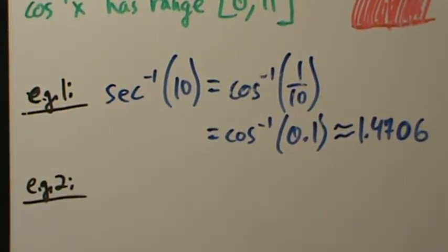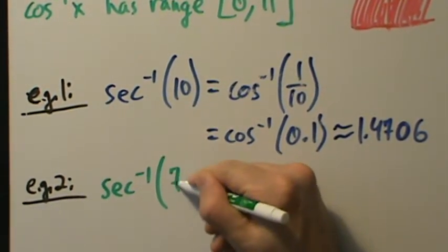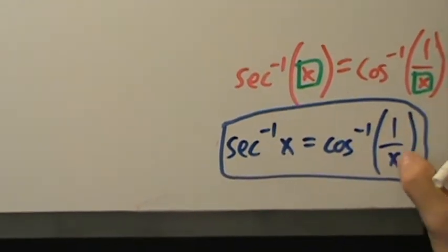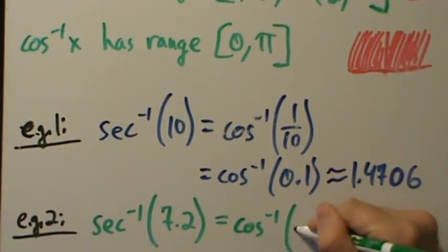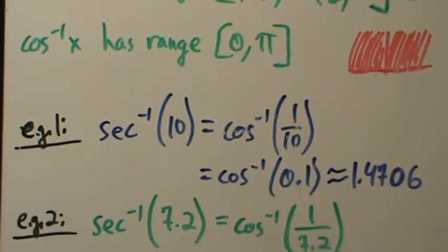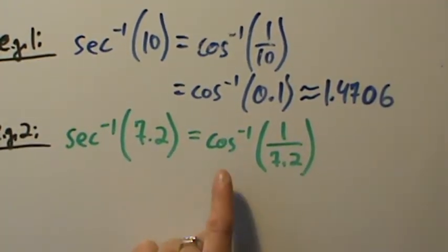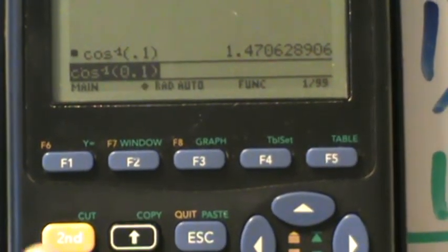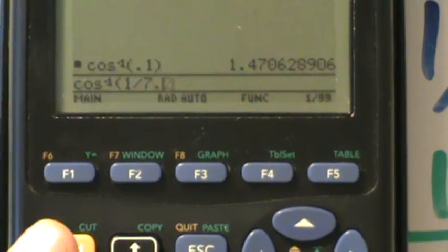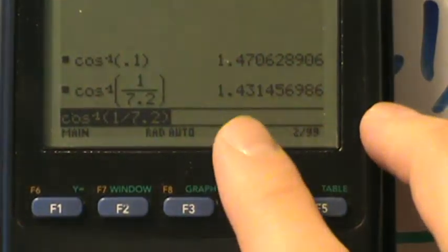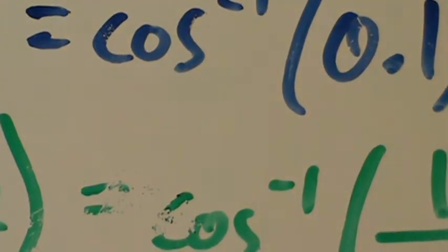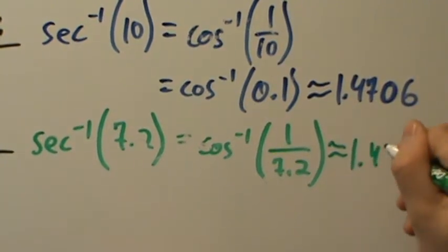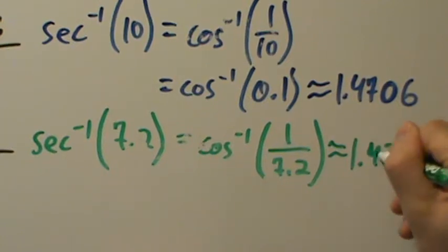Example 2: find the inverse secant of 7.2. We know inverse secant of x equals inverse cosine of 1 over x, so the inverse secant of 7.2 equals the inverse cosine of 1 over 7.2. We enter that directly into the calculator — inverse cosine of 1 over 7.2 — and get approximately 1.4315.